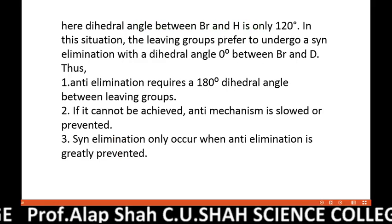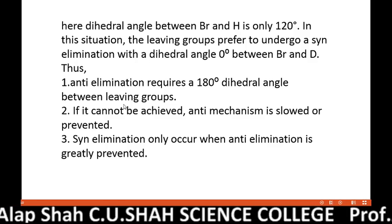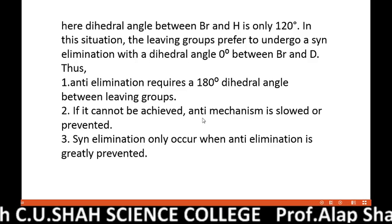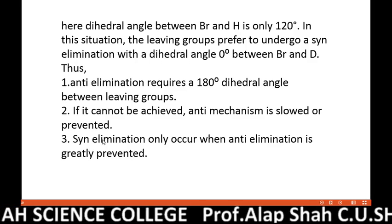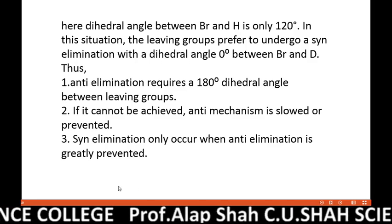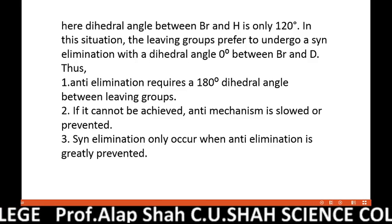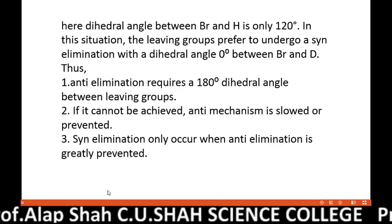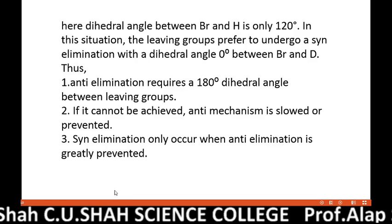To summarize: for anti-elimination, a 180 degree dihedral angle between leaving groups is required — that is called anti-planarity. If that cannot be achieved, the anti-mechanism either slows down or is mostly prevented. And if it is prevented, then and only then does syn elimination occur. I hope you understand the stereochemistry of E2 elimination. We have discussed both possibilities: anti-elimination, which requires anti-planarity at 180 degrees, and syn elimination, which occurs only when anti-planarity is not possible.